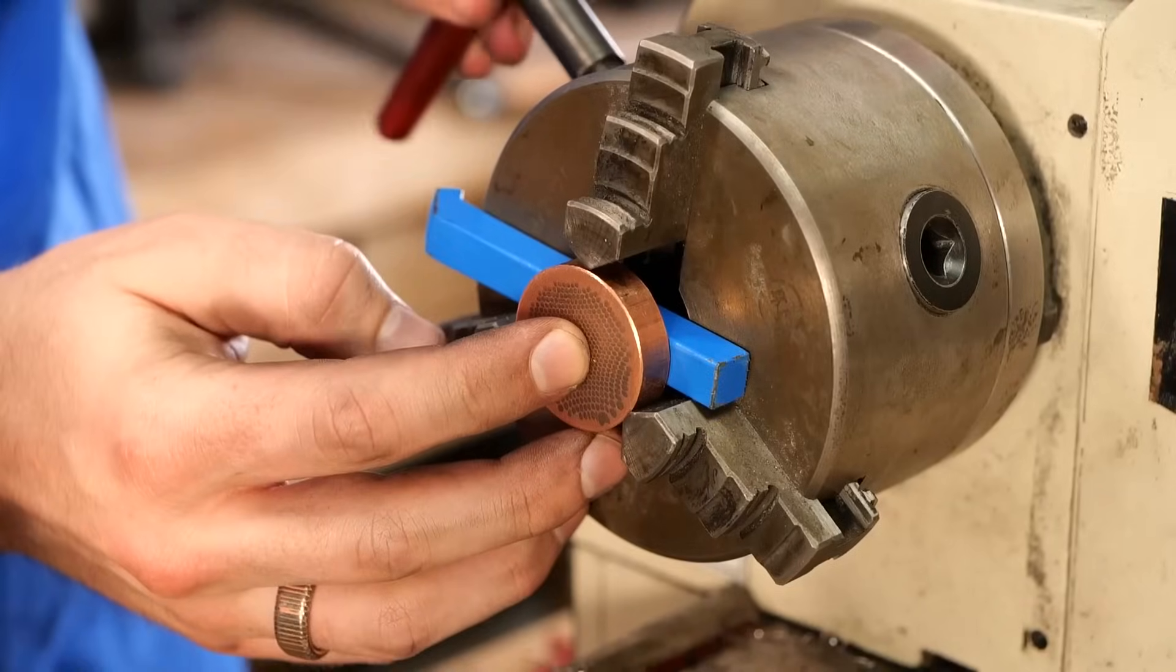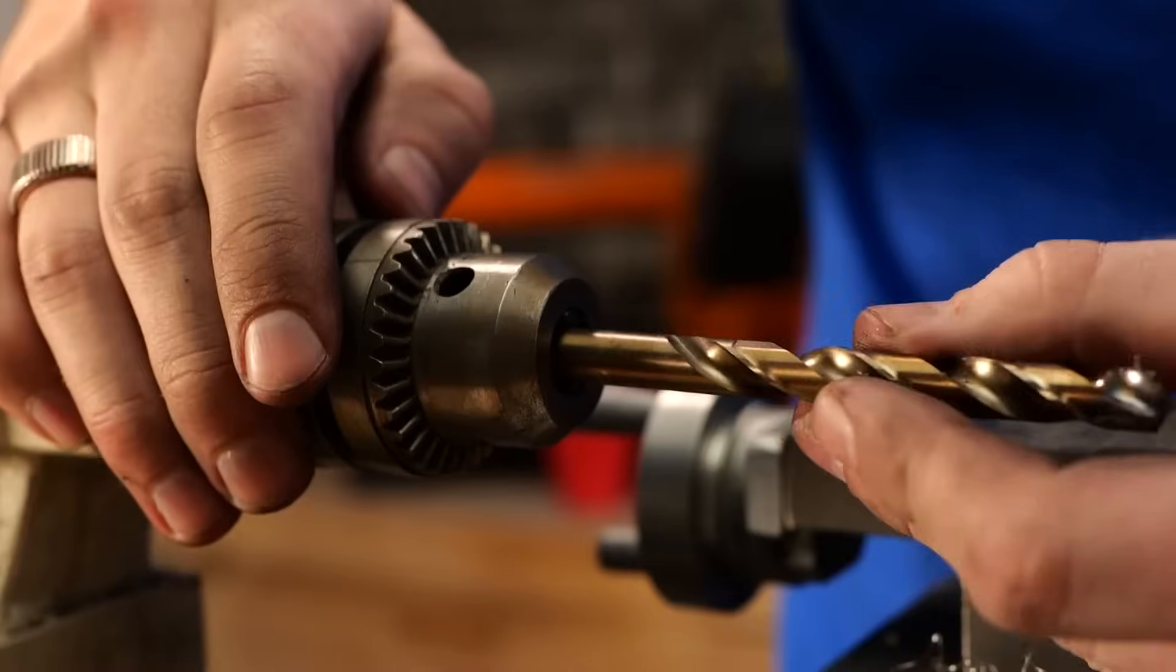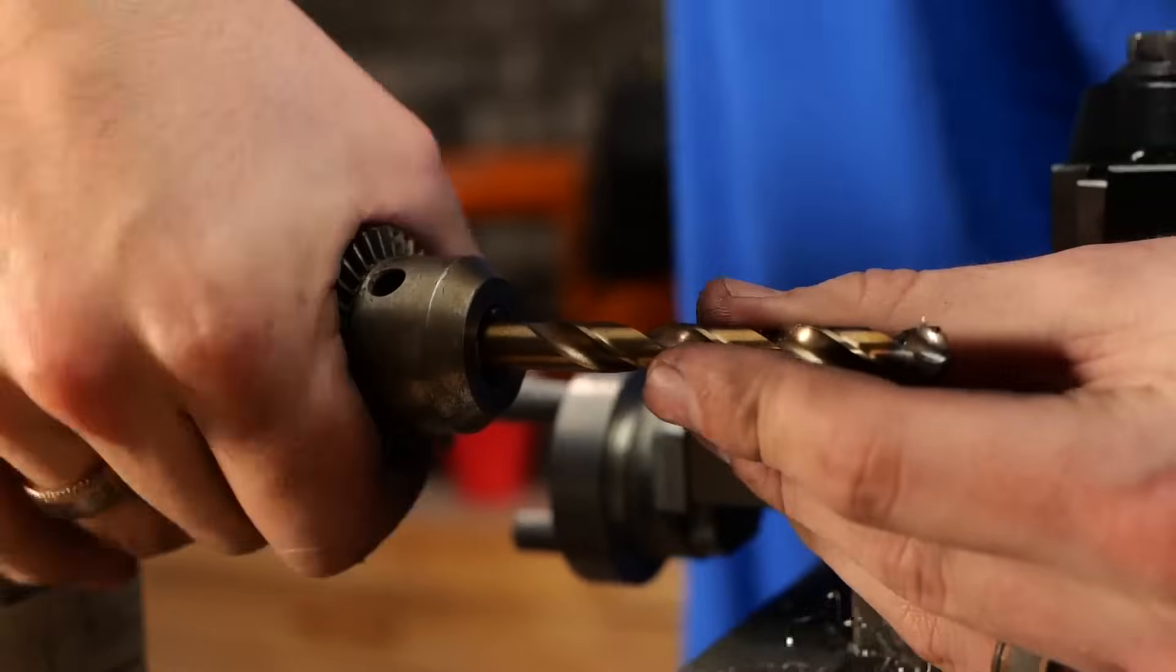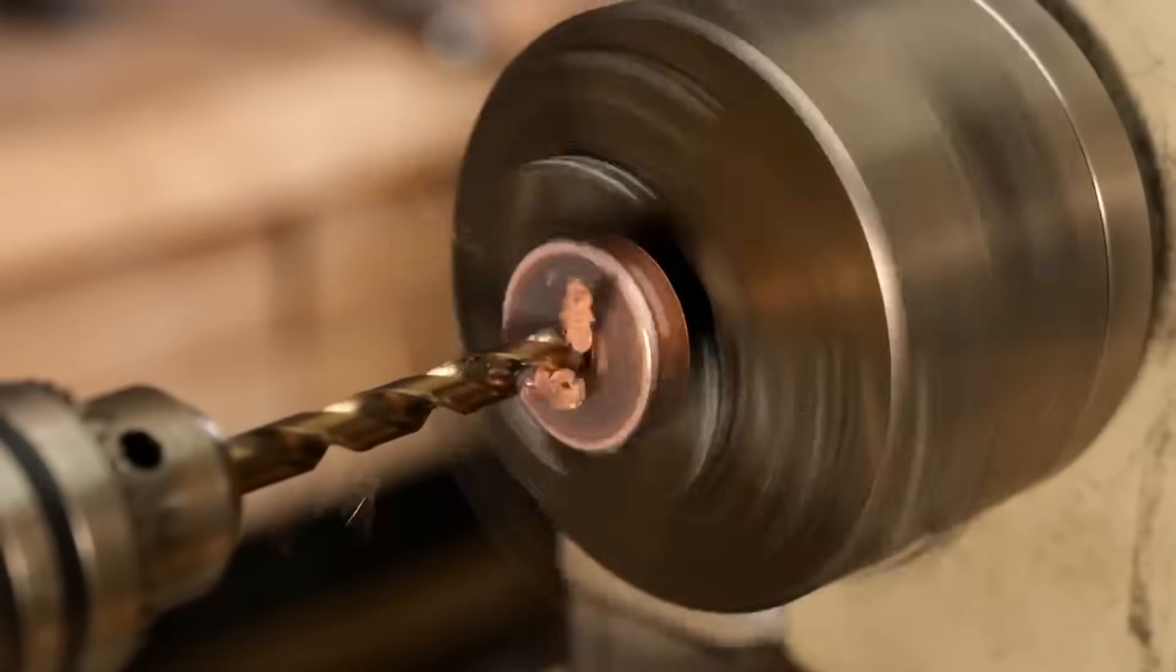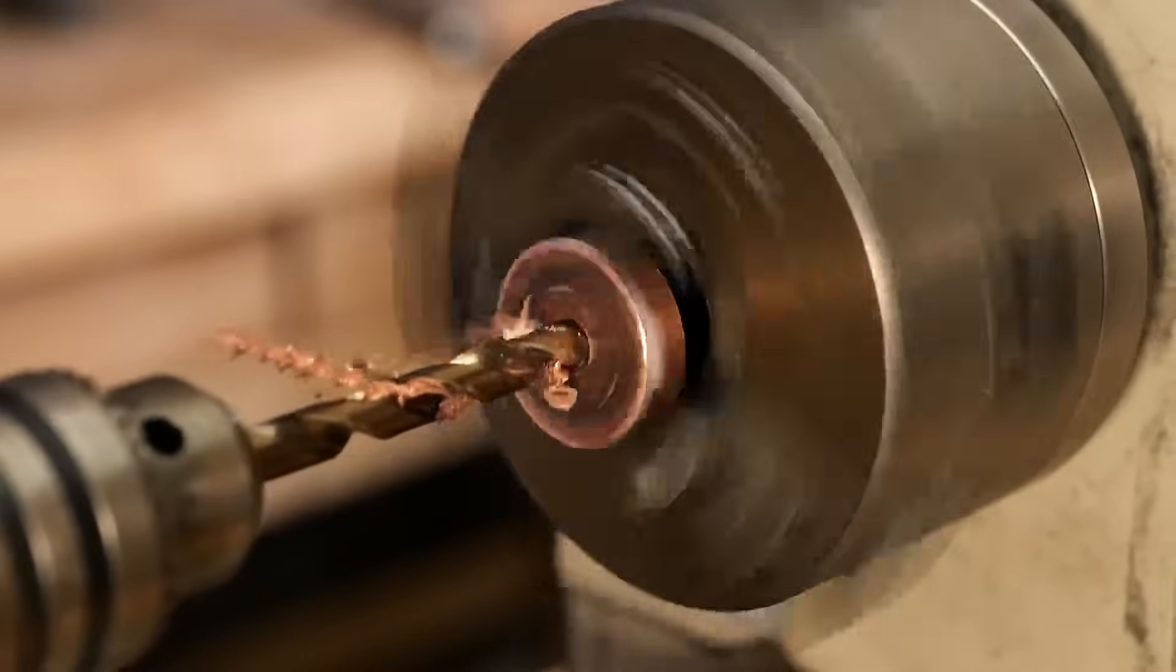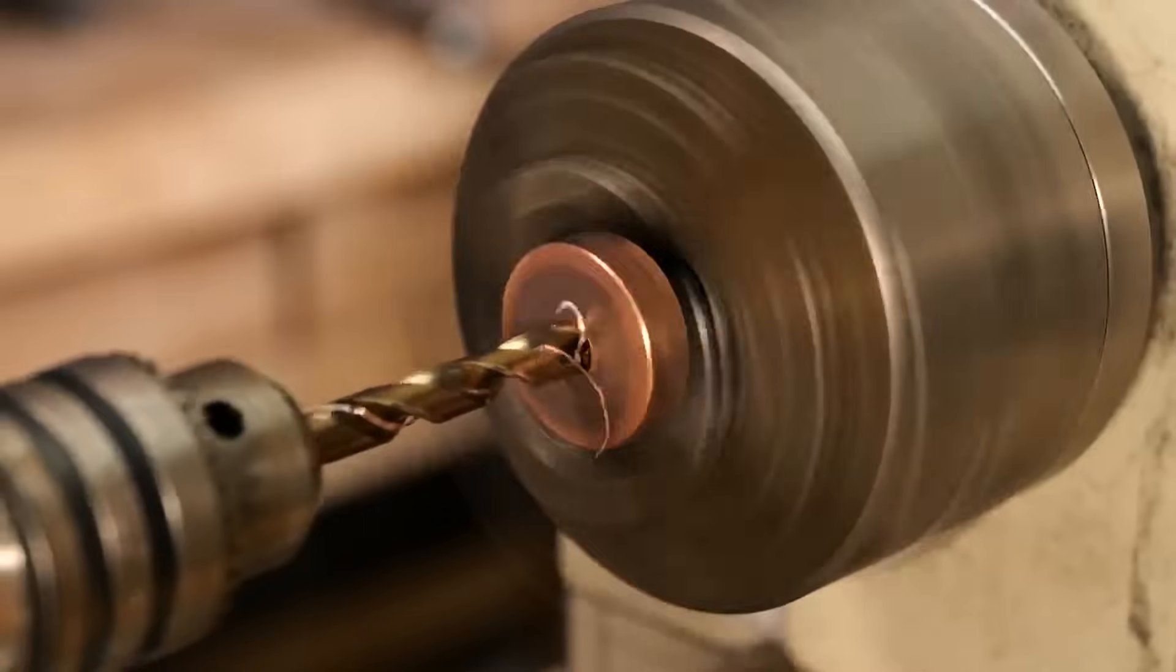All right now back to our superconductor piece. We need to get this ready to pair with the titanium. So I'm going to be repeating a lot of the same steps I did with the titanium. First I'll go ahead and cut out a hole using my drill bit and then later on I'm going to be using my boring bar. We're going to widen that out and get it ready to mate with the titanium.